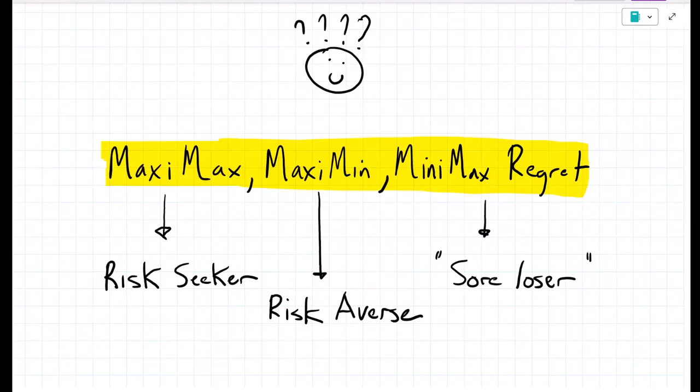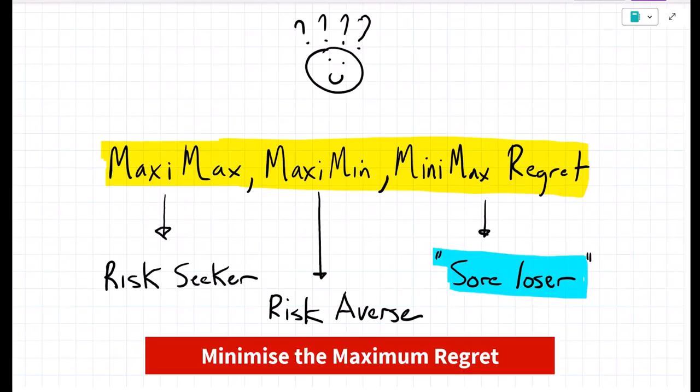The third type of decision-maker we'll look at is what I call the sore loser. Now the sore loser doesn't look at the worst-case or the best-case scenarios. The sore loser wants to avoid the opportunity cost or the regret from making the wrong decision. And the rule that they will employ is minimize the maximum regret.